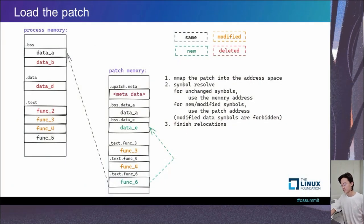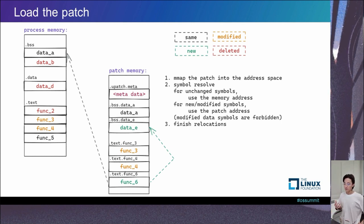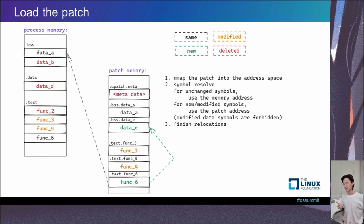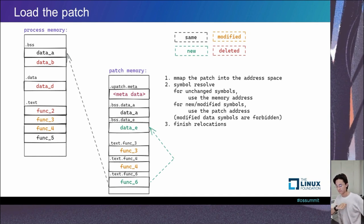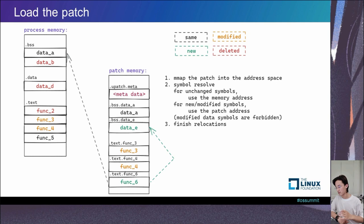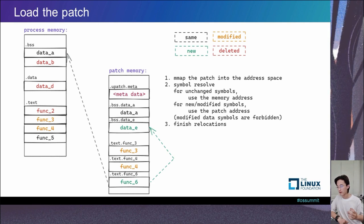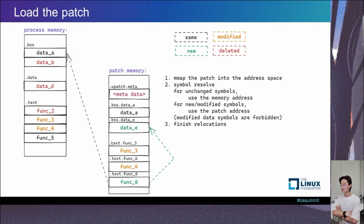Now let's talk about step two: load the patch. This step is simple — map the patch, resolve its symbols, and finish relocations. We use the address from the process memory for the same symbols, but for modified symbols we use the address from the patch memory. For example, in function 6, data A comes from the process memory while data E comes from the patch memory address, because we must ensure that the patch sees a consistent memory.